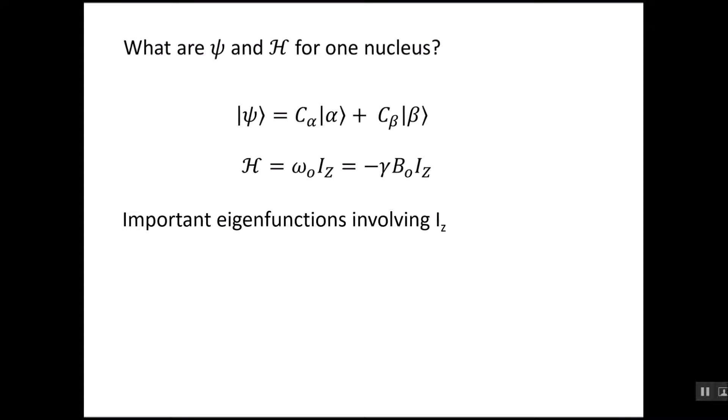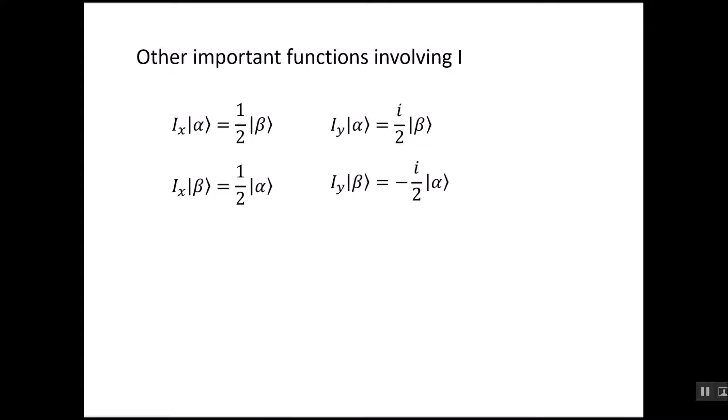If we just said that IZ was an operator, how does it operate? Well, here's the important eigenfunctions that we need to keep in mind. IZ applied to alpha gives one-half times alpha. So it's giving the eigenfunction back times a constant. And IZ on beta equals minus a half beta. Those are two that we need to remember. So if we said a Hamiltonian, as we've written it above, is applied to alpha, we just saw that IZ on alpha is going to be one-half alpha. And IZ on the constant term, the Larmor frequency omega zero, doesn't operate on it. So it just comes out in front of the IZ term. So Hamiltonian on alpha gives one-half times Larmor frequency times the alpha function.